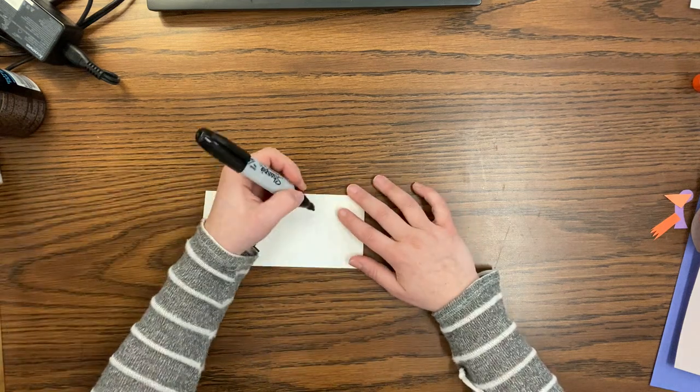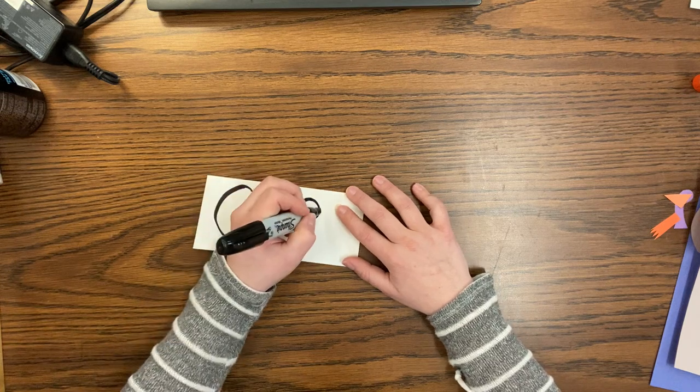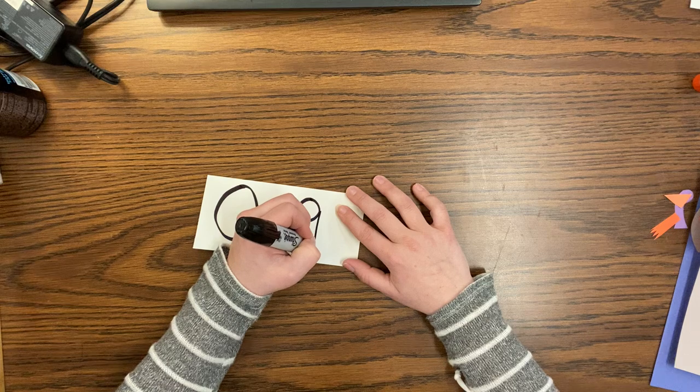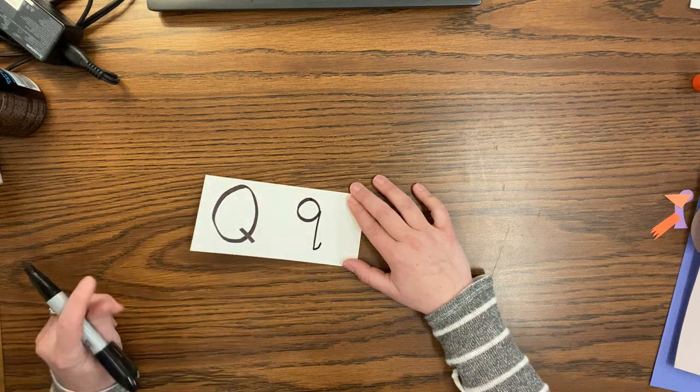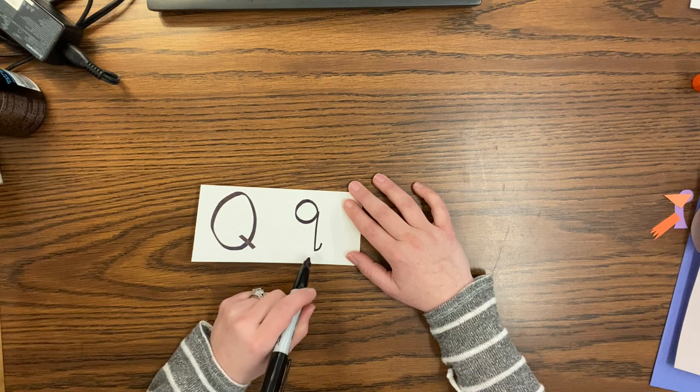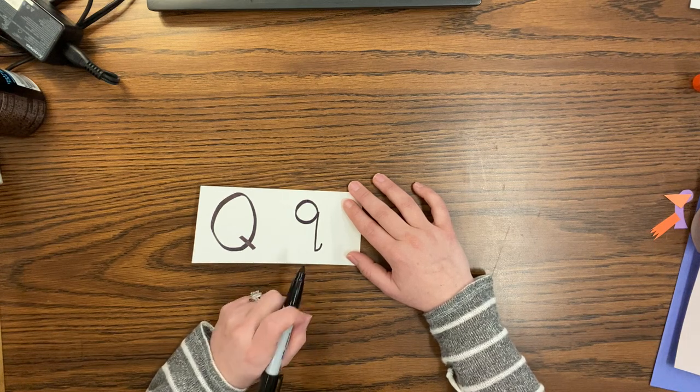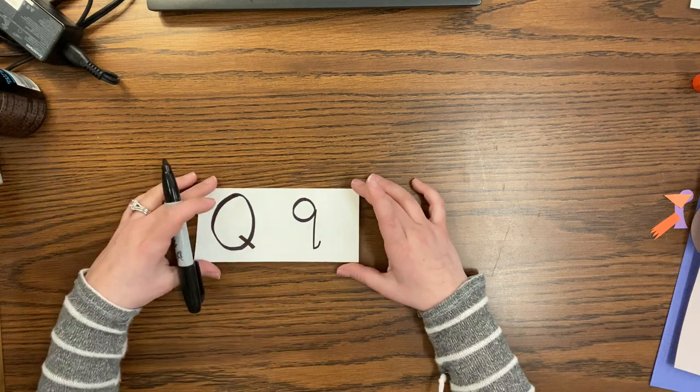Let's try our lowercase Q. It's a little curve down, little curve back up, big line down, and don't forget the tail for the lowercase Q. Queen or quarter. Those are our Q's.